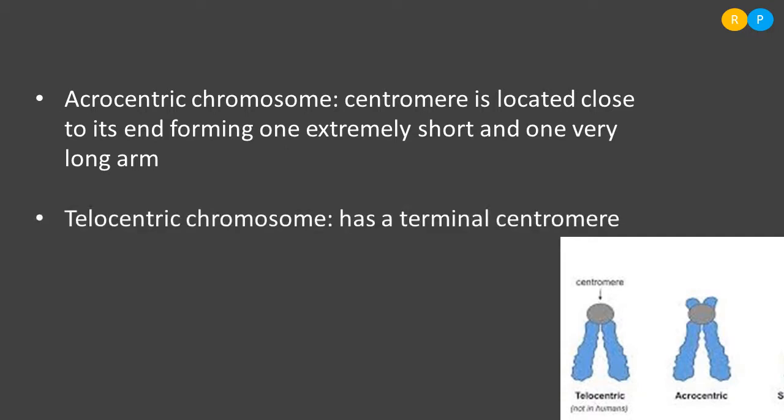The last and fourth type is the telocentric chromosome, where the centromere is exactly at the tip of the chromosome — the terminal position. Because of this, two arms can be found at one end only; on the other end there are no arms. These are the four different types of chromosomes based on the position of the centromere, and they can be seen during different stages of cell division.